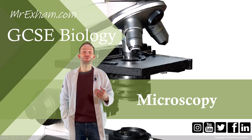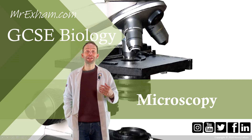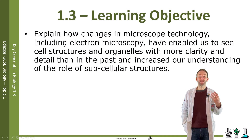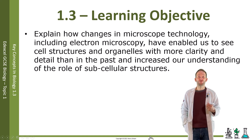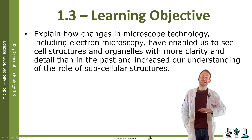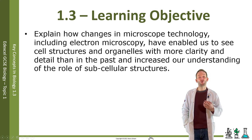Objective 1.3: Explain how changes in microscope technology, including electron microscopy, have enabled us to see cell structures and organelles with more clarity and detail than in the past, and increased our understanding of the role of subcellular structures.